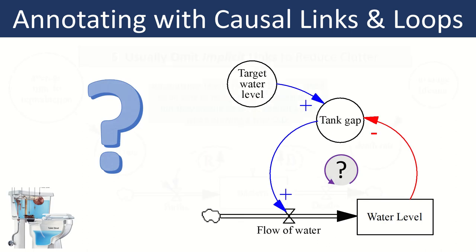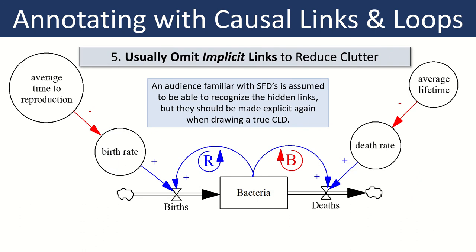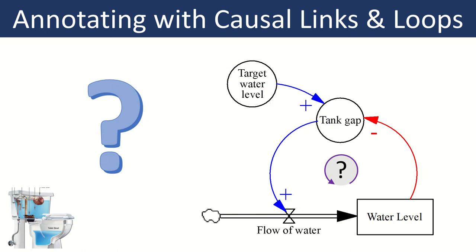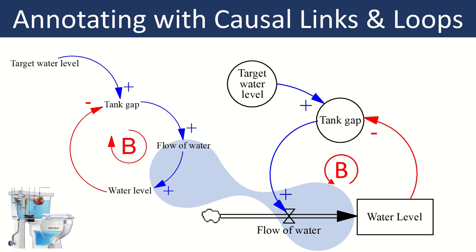For the toilet system: the inflow has a positive implicit link, giving a positive–negative–positive chain, which is a balancing loop. Even though the link wasn't explicitly drawn, it's actually there. You can annotate the stock and flow diagram with a balancing loop label without drawing the full CLD, just to remind the reader that it is a balancing feedback.